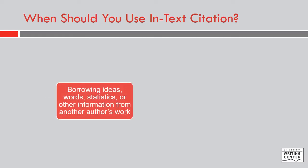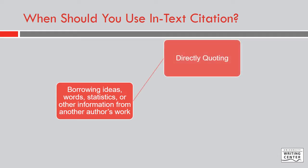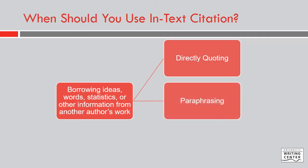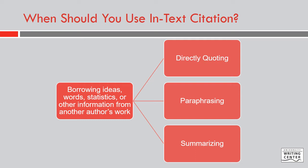If you are using information from someone else's work, it must always be cited not just on the works cited page, but in-text as well. When directly quoting from a source, an in-text citation should immediately follow the quote. However, this is not the only time an in-text citation should be used. When paraphrasing a source, which means restating a specific passage or idea in your own words, an in-text citation should be used at the end of the paraphrase.